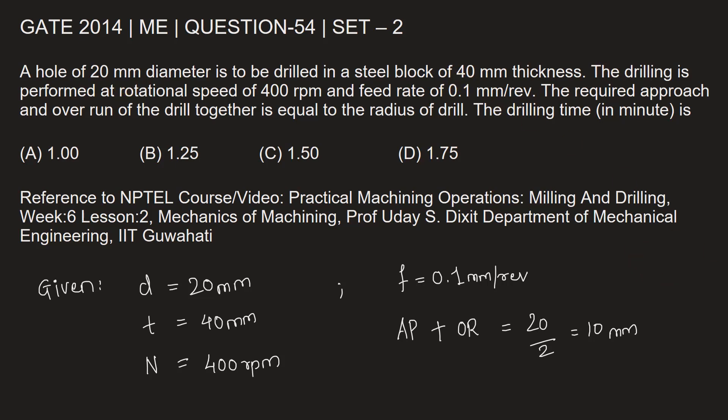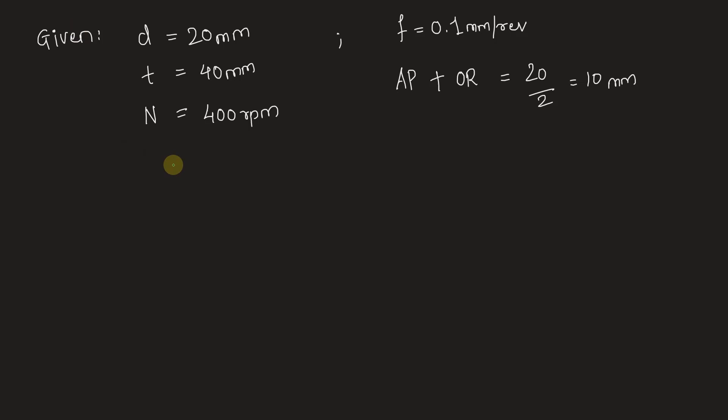Let's find out the drilling time. Simply, speed is equal to distance upon time. The distance for which the drill has to run will be approach plus overrun plus the thickness of the hole. So the total length that the drill will run will be 40 plus 10 millimeters, which is 50 millimeters.